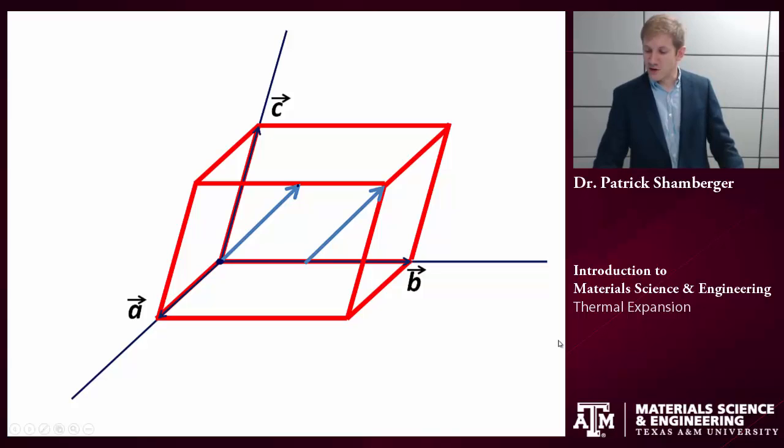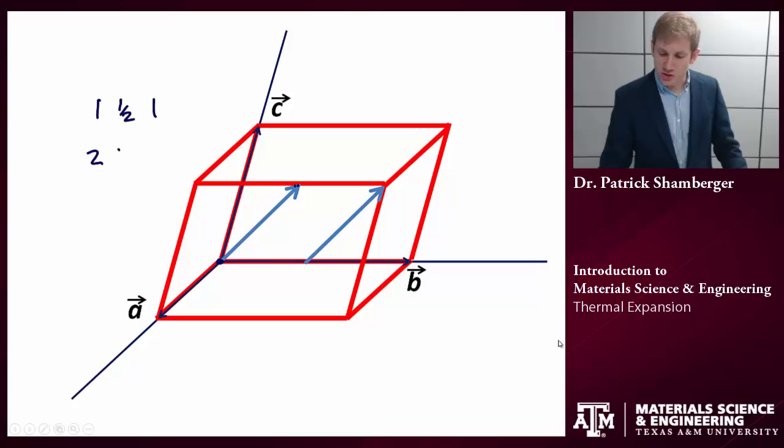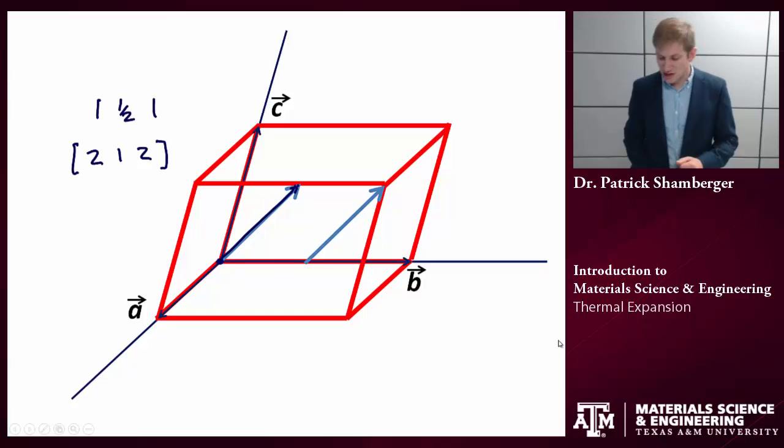And then all I need to do is figure out the fractional coordinates of this head position. And so in this case, it's 1, 1 half, 1. Again, if I want to write a direction, I want to use integers, not fractions. And I need to use a square bracket notation. So I multiply this whole thing through by 2. I get 2, 1, 2. And I use square brackets. And this is how I would denote this particular direction that I'm showing. And notice that this is the same thing we got using the previous method.